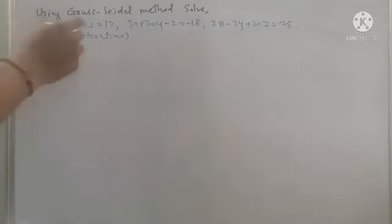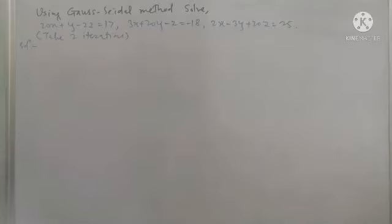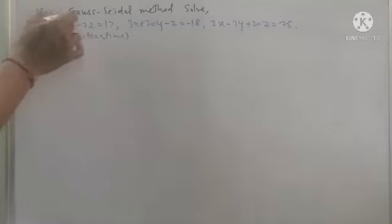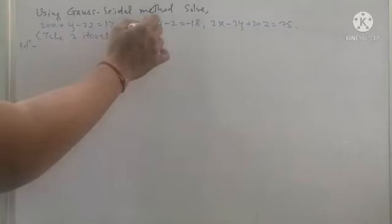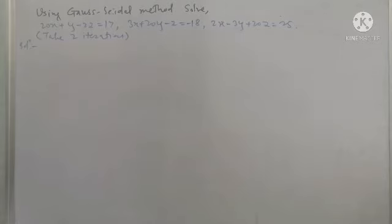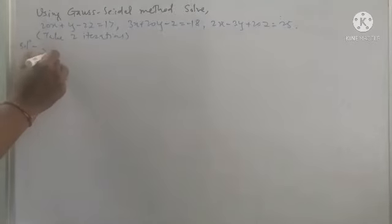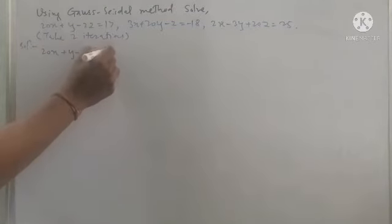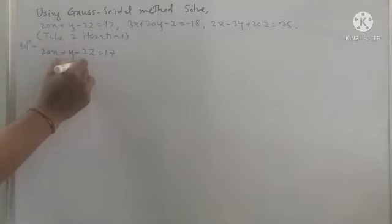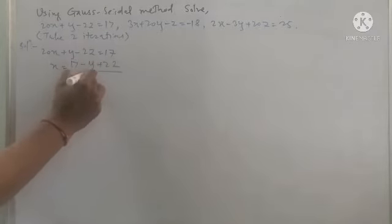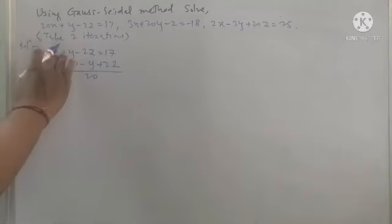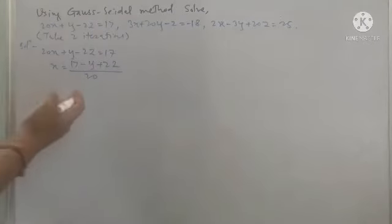Now for the second example, we solve the given system of equations. From each equation we draw the unknown in terms of the remaining variables using the coefficients. In the first equation the coefficient of x is largest, so we draw x. In the second equation we draw y, and in the last equation we draw z. Taking the first equation: 20x + y - 2z = 17, so x = (17 - y + 2z) / 20, put as number one.